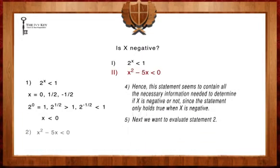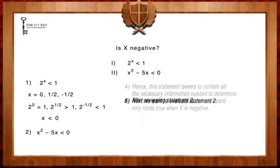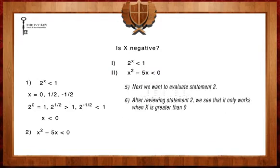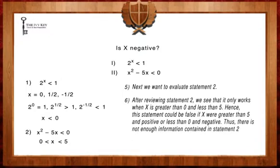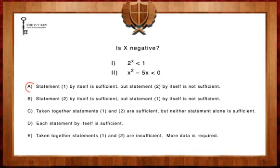Next, we are going to evaluate statement 2. After reviewing statement 2, we see that it only works when X is greater than 0 and less than 5. Hence, this statement could be false if X were greater than 5 and positive or less than 0 and negative. Thus, there is not enough information contained in statement 2 for it to be sufficient. Therefore, the answer is A.